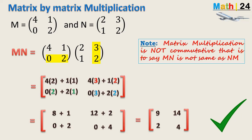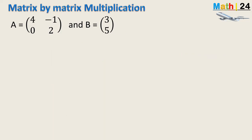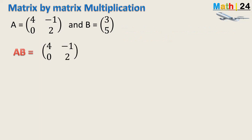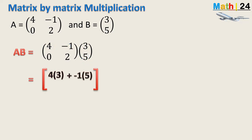Note: matrix multiplication is not commutative — that is, MN is not the same as NM. Let's take another example, AB. We can verify that AB is possible but BA is not possible when you check compatibility. So we find just AB: AB equals A times B, and we compute: 4×3 + (-1)×5.